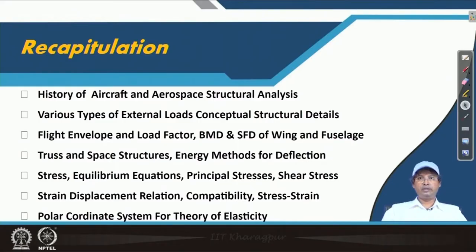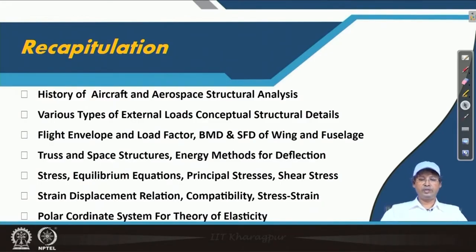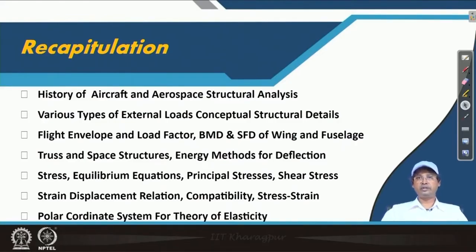The history of aircraft, solid mechanics, and structural analysis have been covered, along with various types of external loads and conceptual structural details. We have done flight envelope and load factor, bending moment and shear force diagrams of wing and fuselage, truss and space structures, and problems related to landing gear. Different energy methods for deflection — for determinate as well as indeterminate structures, both external and internal — have been used, including the dummy load method, unit load method, and Castigliano's theorem.